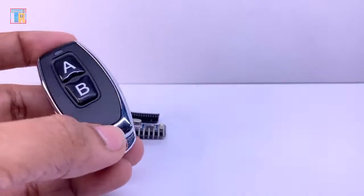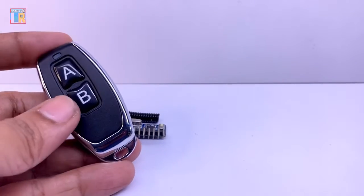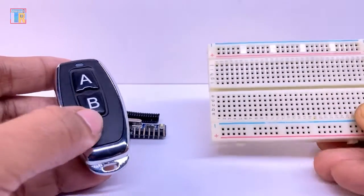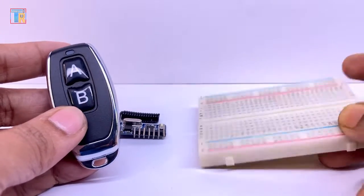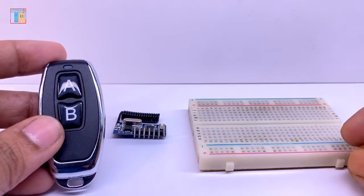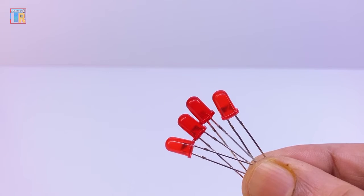I will use this RF remote to show you how this receiver module works. You can use any other 433 megahertz RF remote control. It can learn different remote codes. For connection I will use a breadboard and four LEDs on output pins.